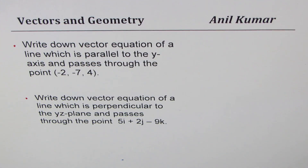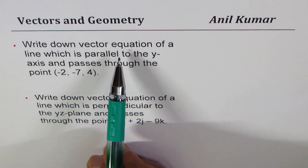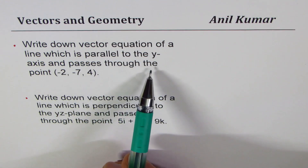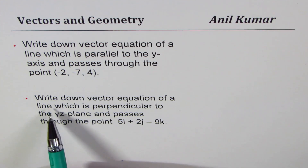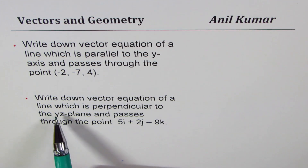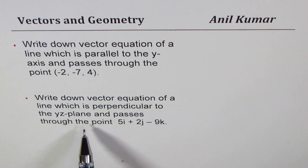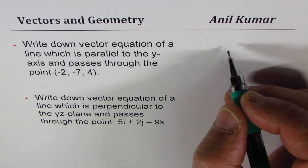I'm Anil Kumar sharing with you solutions of questions for my subscriber on vectors and geometry. We have two questions here: write down the vector equation of a line which is parallel to the y-axis and passes through the point (-2, -7, 4). The second question is: write down the vector equation of a line which is perpendicular to the YZ plane and passes through the point 5i + 2j - 9k.